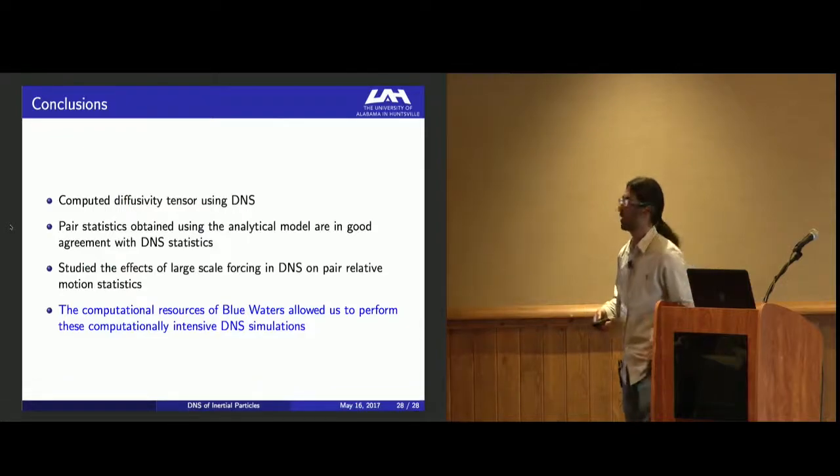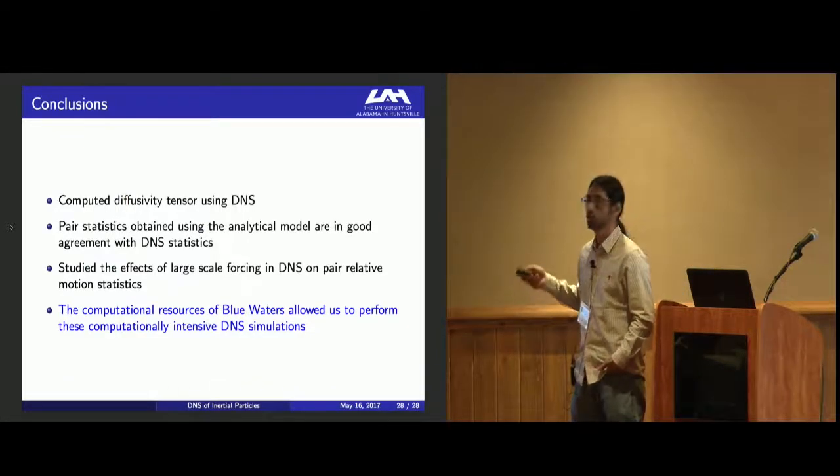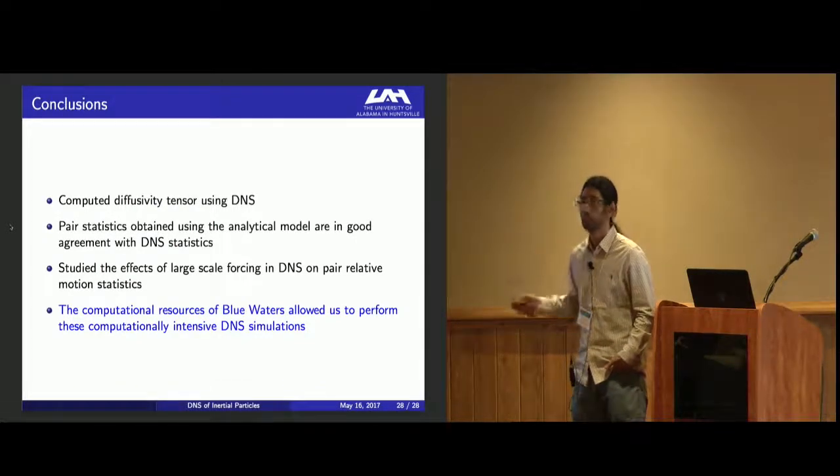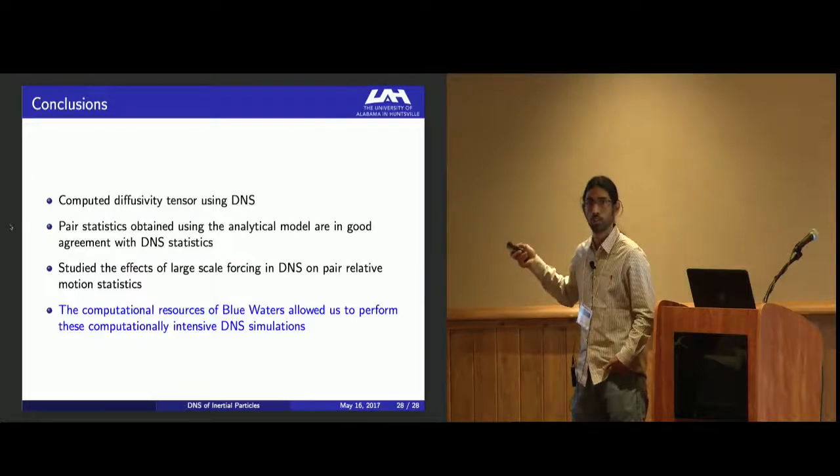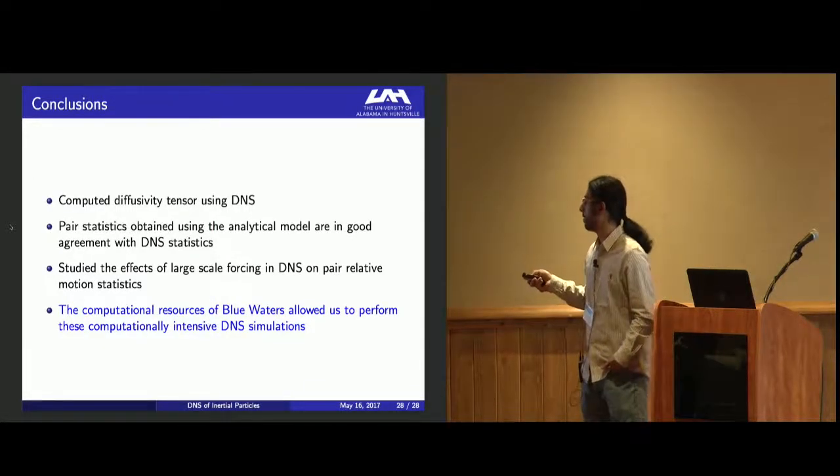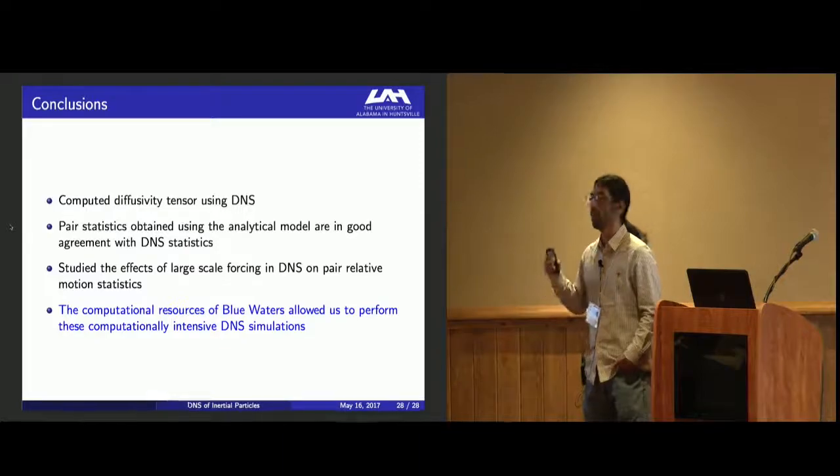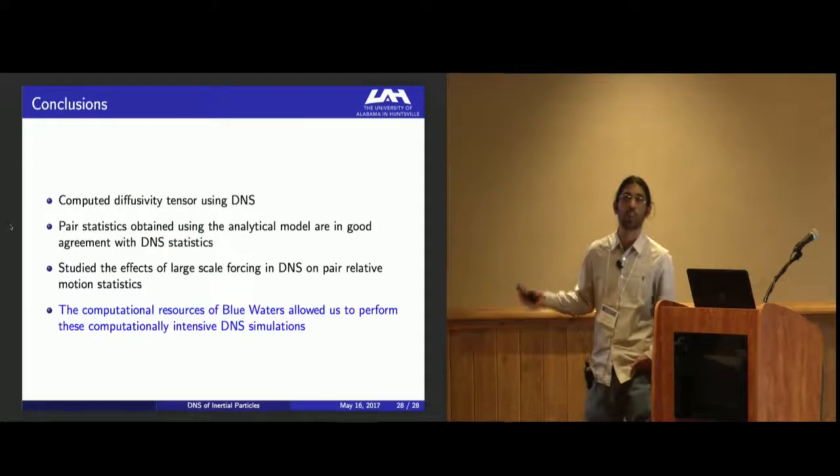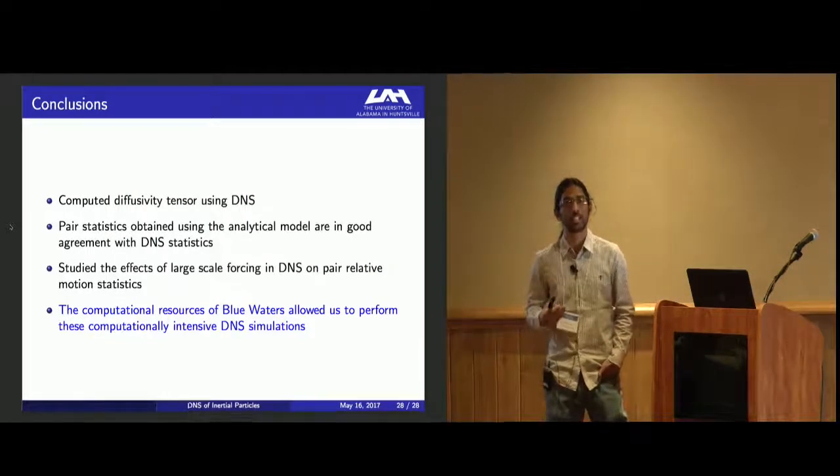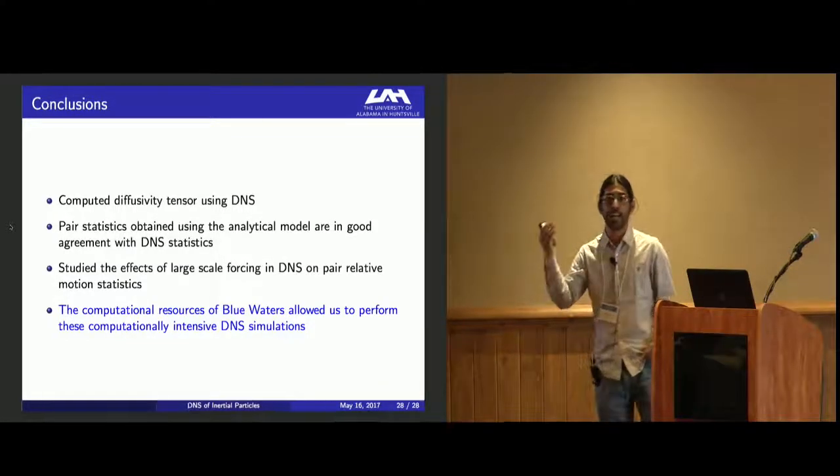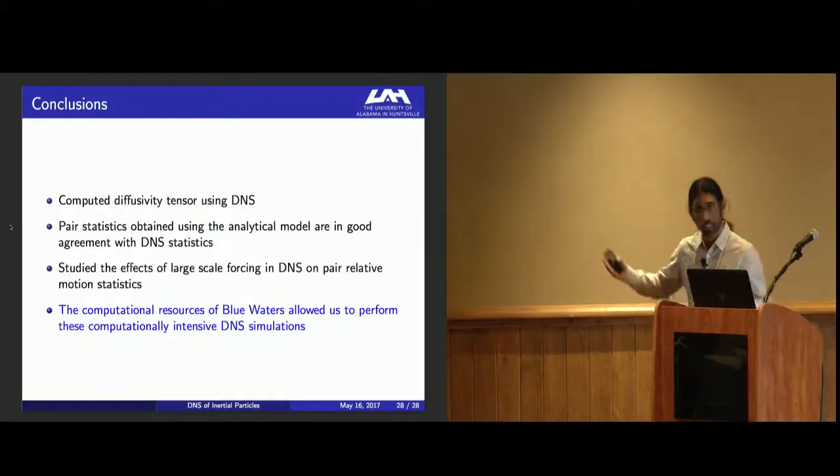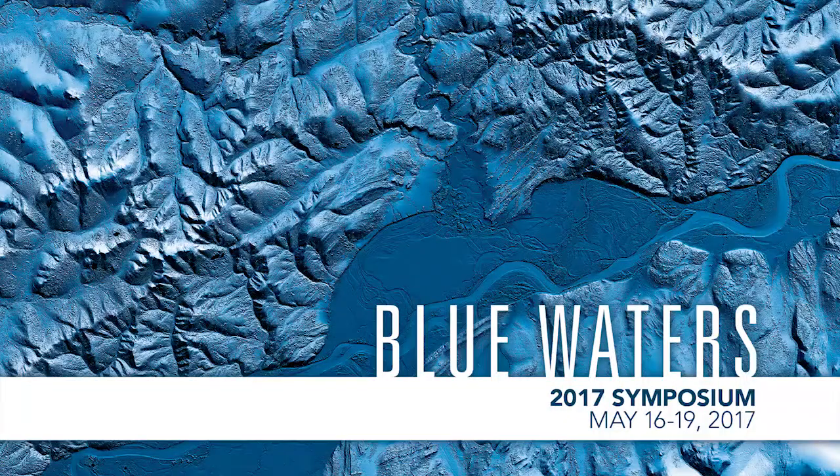So I want to conclude. We have computed diffusivity tensor using DNS. Pair statistics obtained using the analytical model are in good agreement with DNS statistics. We studied the effects of large scale forcing in DNS on pair relative motion statistics. The computational resources of Blue Waters allowed us to perform these computationally intensive tasks, and we're really thankful. I urge you all to go through our Journal of Fluid Mechanics papers to get a detailed explanation. Thank you.